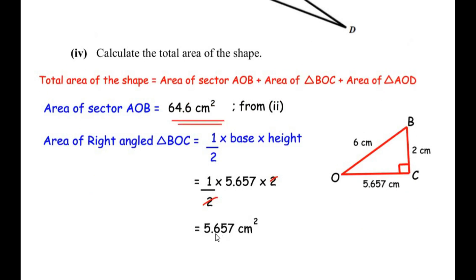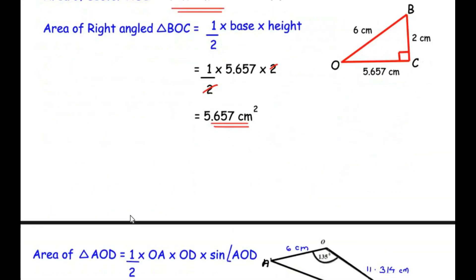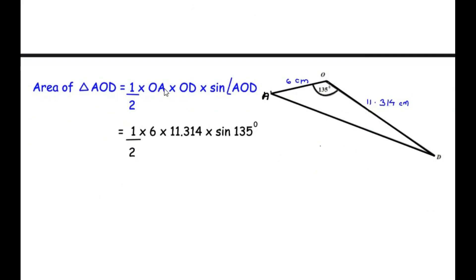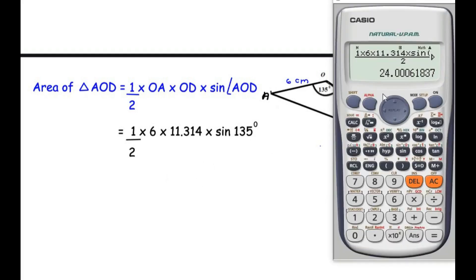For the area of triangle AOD, the formula is one half times OA times OD times sine of angle AOD. Since this is not a right-angle triangle, we use the sine formula. Substituting: one half times 6 times 11.314 times sine of 135 degrees. This gives a value of 24.00, so the area of triangle AOD is 24 centimeters squared.